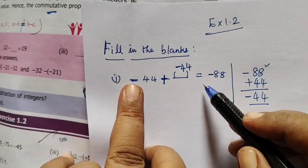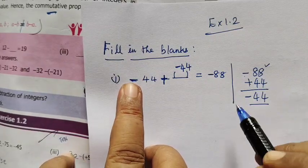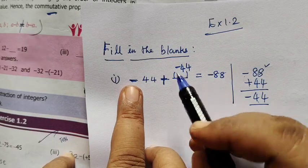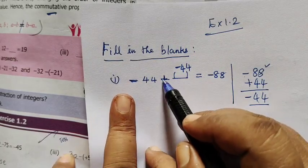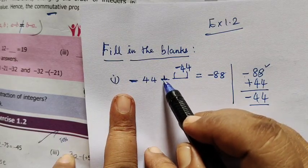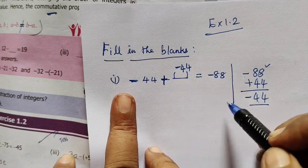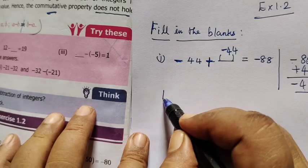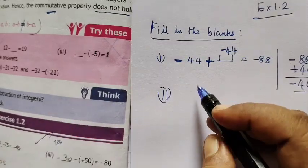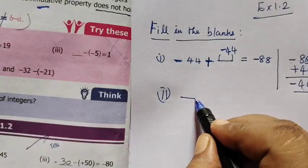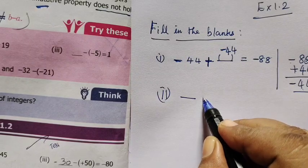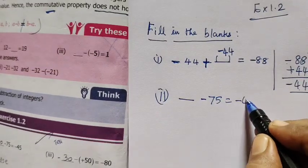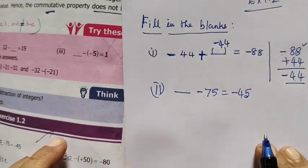So, what do you fill in this box? The answer is minus 44. If you put minus 44 in this box, you get minus 45 equals minus 45. That gives us the answer.